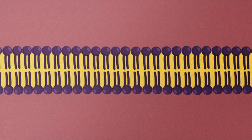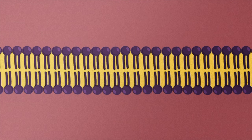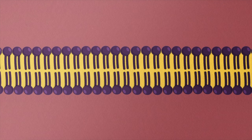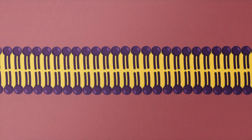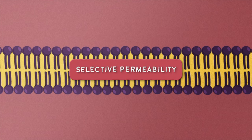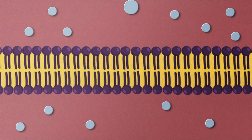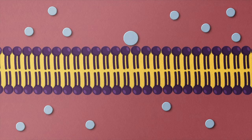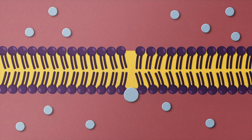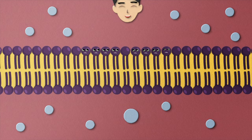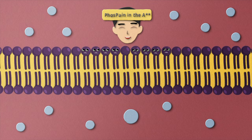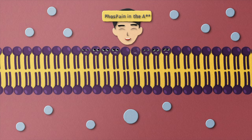Phospholipids, in addition to giving the cell membrane its characteristic bilayer structure, also give the membrane something called selective permeability. Selective permeability is pretty much what it sounds like — phospholipids select what they allow to go through the cell membrane.